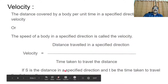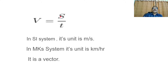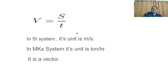The unit of velocity in SI system is meter per second, because displacement is in meters and time is in seconds. In MKS system, it may also be expressed in kilometers per hour. Since displacement S is a vector quantity, velocity is also a vector quantity. So the key difference between speed and velocity is: speed is a scalar quantity, while velocity is a vector quantity.